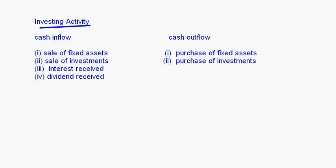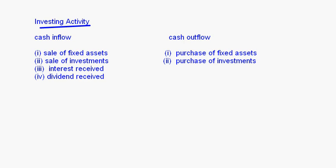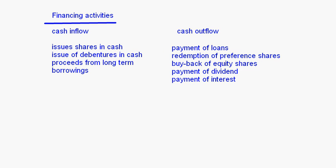This is the basic foundation of cash flow statements — you should understand all the activities and what items come under each. In our next session, we will take up questions on identifying different transactions and also a question on operating activities. With that, I end this session.